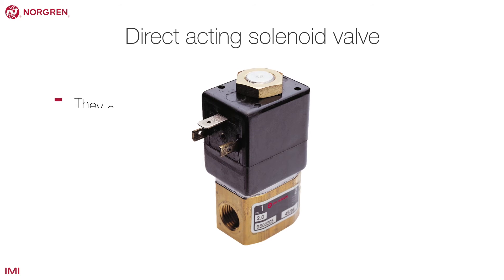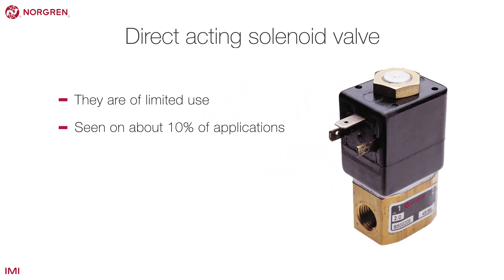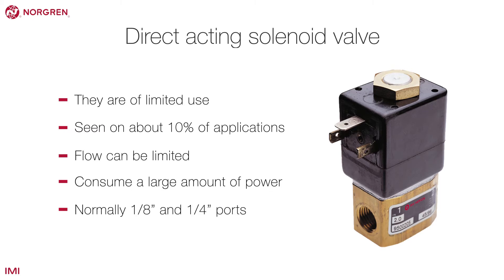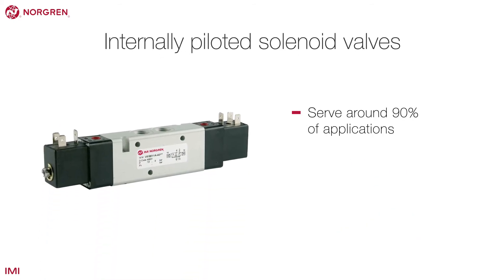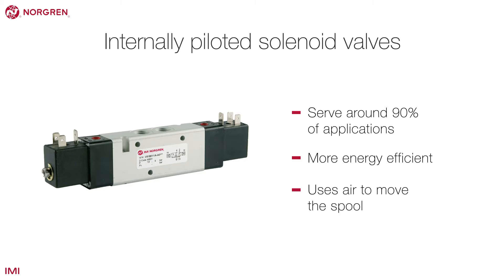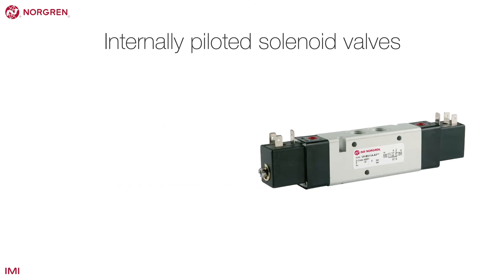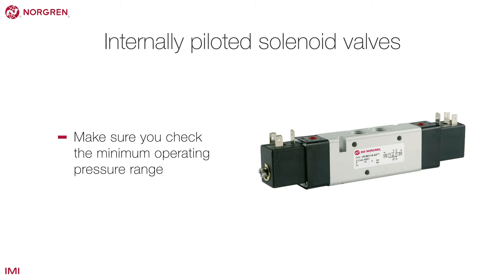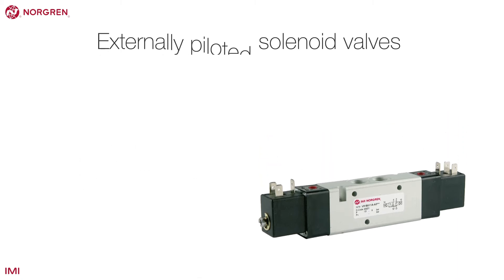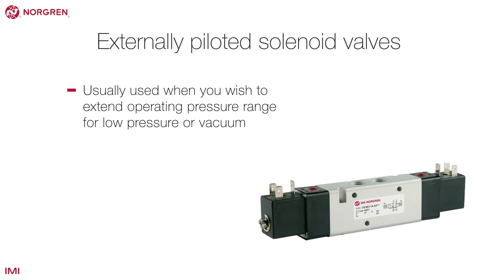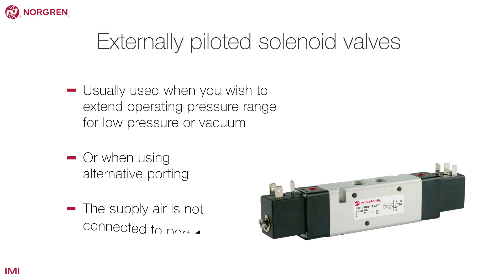Direct acting solenoid valves are of limited use and are seen on about 10% of applications, mainly because flow can be limited and they consume a large amount of electrical power. Internally piloted solenoid valves serve around 90% of applications — this is by far the most common type and is much more energy efficient, using air to move the spool across and change the position of the valve. When selecting a valve, check the minimum operating pressure range. An external pilot is usually used when you wish to extend the operating pressure range for low pressure or vacuum, or when using alternative porting where the supply air is not connected to port 1.